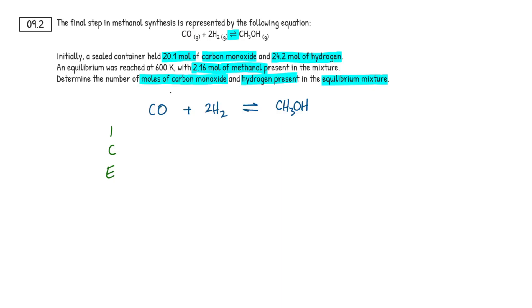Let's look at carbon monoxide, our first reactant here. And it's told us in the question that we have 20.1 moles initially. So that's our initial amount. We also have a value for the hydrogen, 24.2. So let's put that in as well.